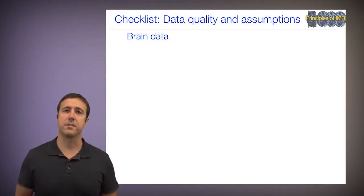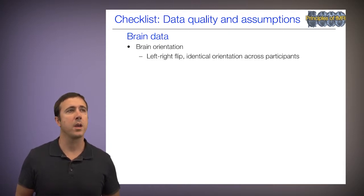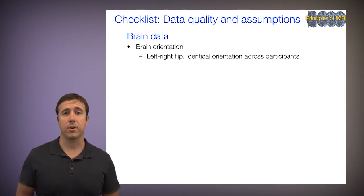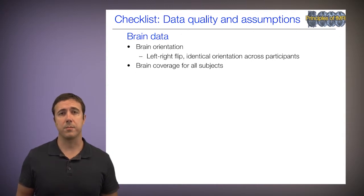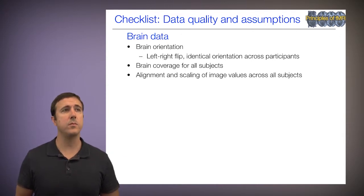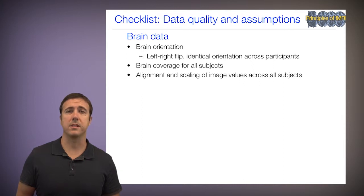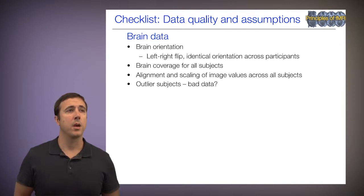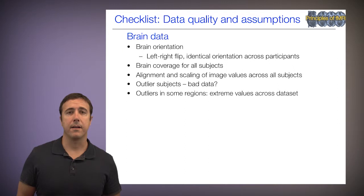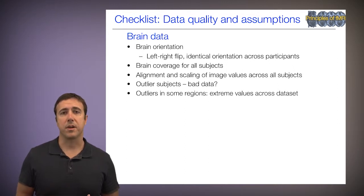In terms of our checklist, here are some things we'll look at regarding brain data. We'll look at brain orientation, a left-right flipping issue, and identical orientations across participants. We'll make sure there's good brain coverage for all subjects and the voxels we expect. We'll make sure that alignment and scaling of image values are the same across subjects, which can help diagnose a variety of problems. We'll look for outlier subjects, which might be a signal for bad data, and outliers in specific brain regions.